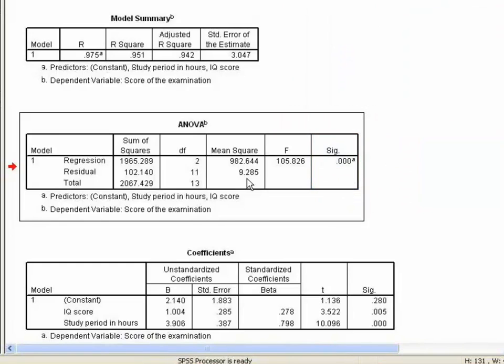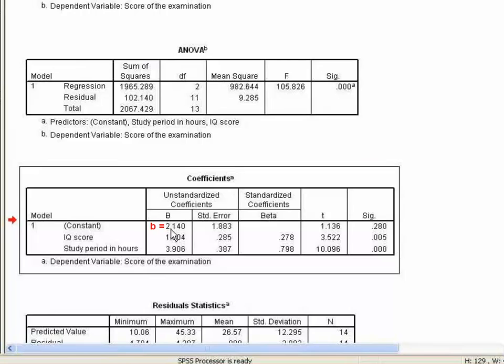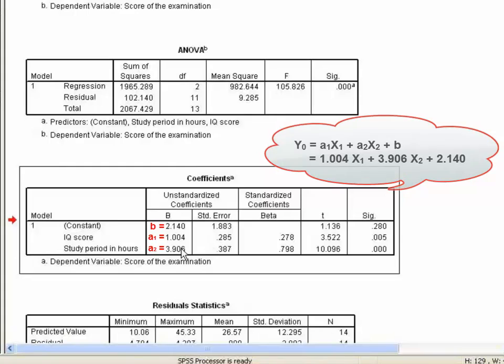The value of constant B is 2.140. Constant a1 for IQ score is 1.004, and constant a2 for study period in hours is 3.906 at the coefficients table. So, the regression equation stands: Y = a1X1 + a2X2 + b, which equals 1.004X1 + 3.906X2 + 2.140.